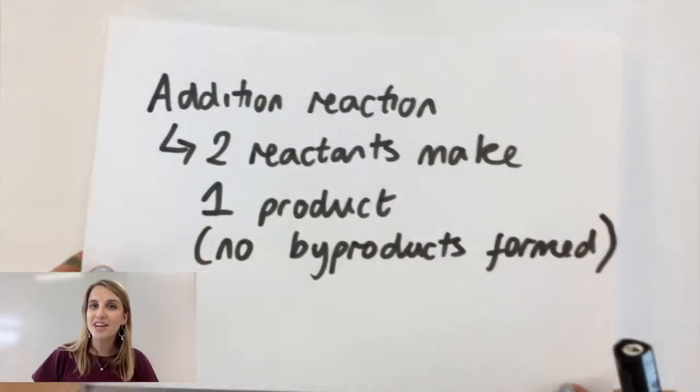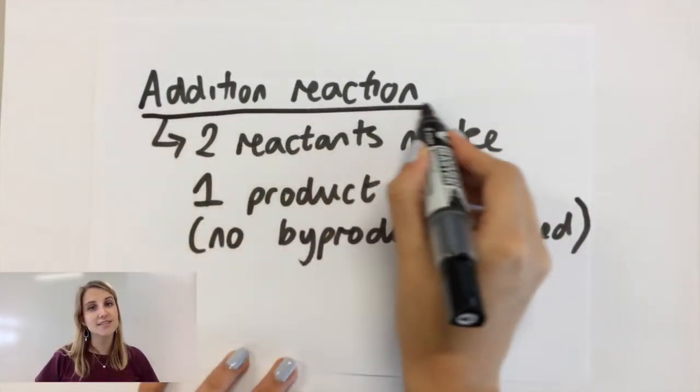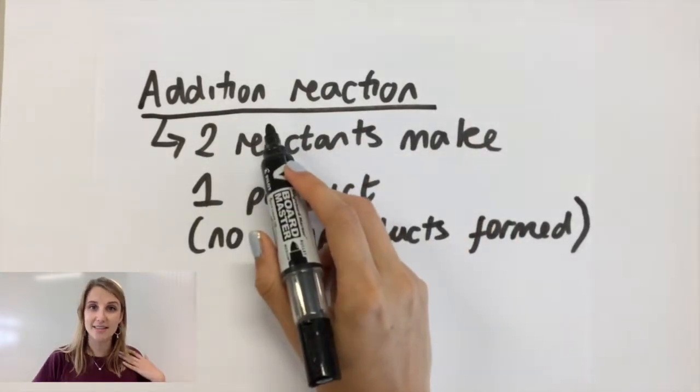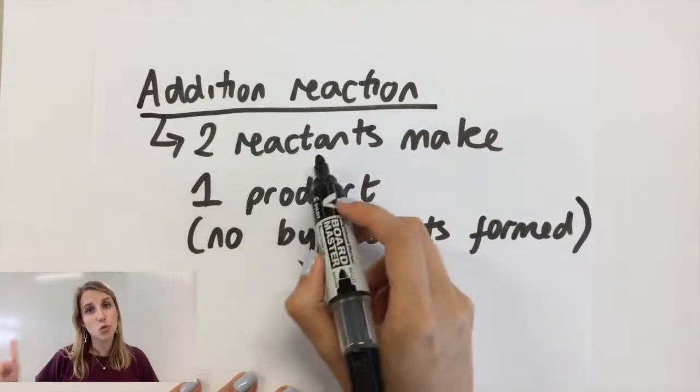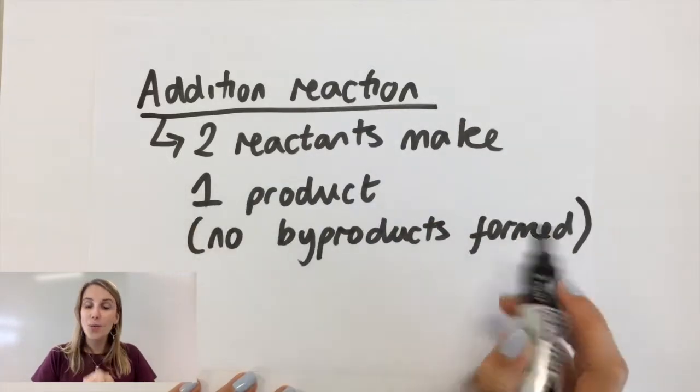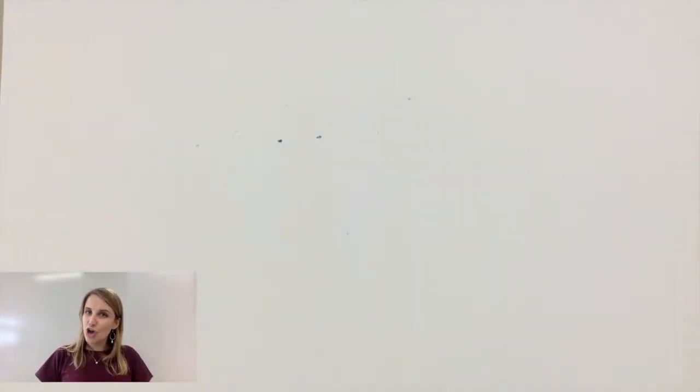If we define what an addition reaction is first, so if a reaction is called addition that means that you take two reactants and you convert it into one product, so you add two things together. What this means is you always only get one product and that means that there's no byproducts as a result.